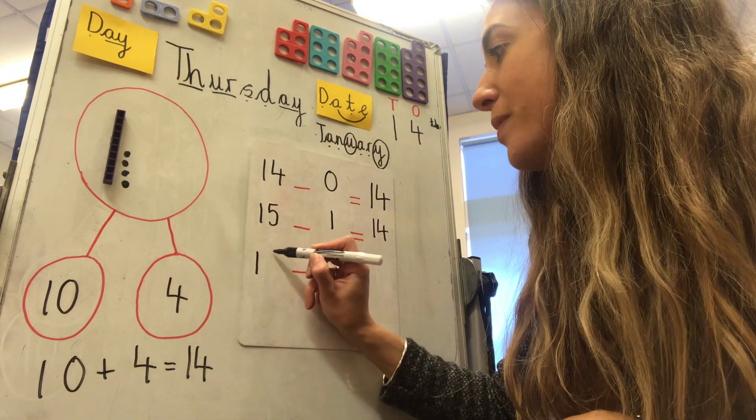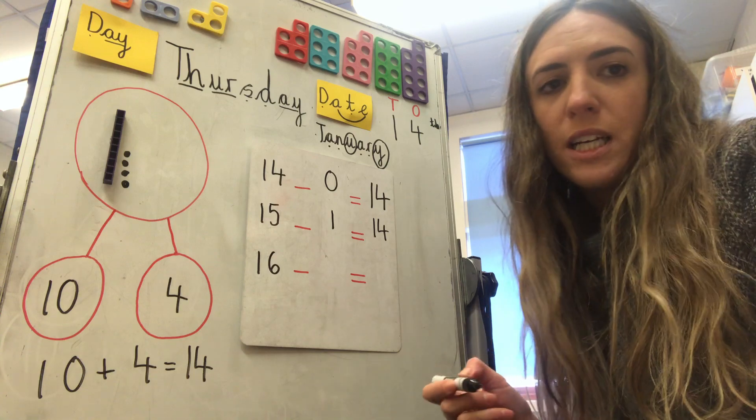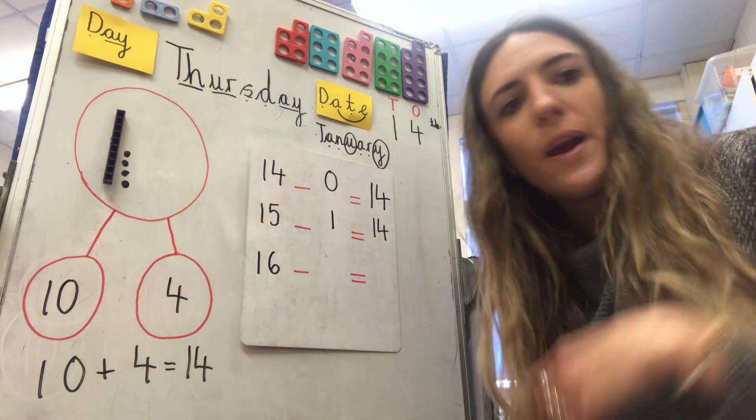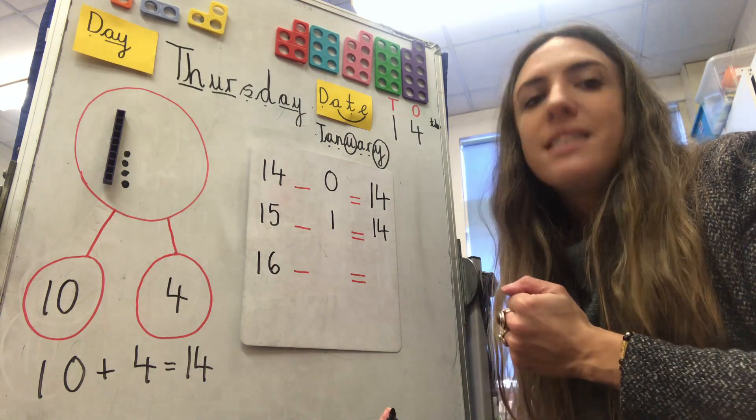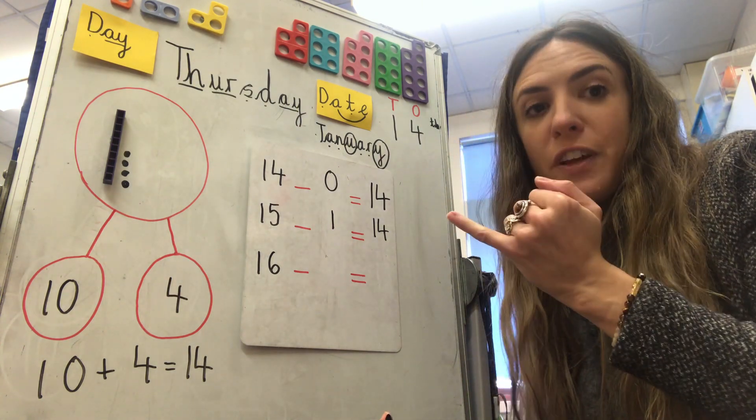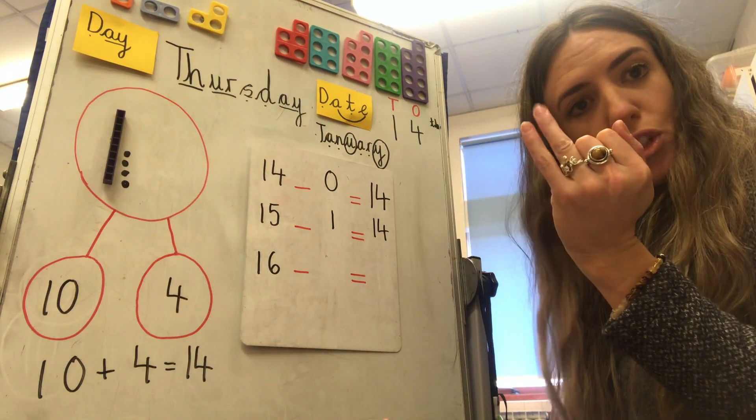Okay. What about sixteen? Sixteen take away how many makes fourteen? Oh, some of you are so quick. Let's check. Sixteen in your head. Count backwards. Sixteen, fifteen, fourteen. So, I took two away.